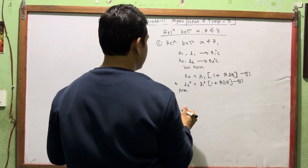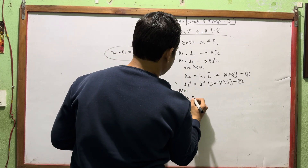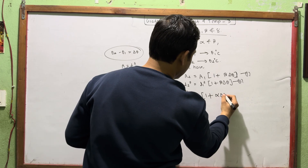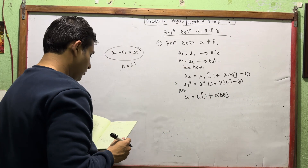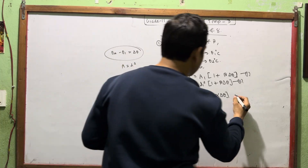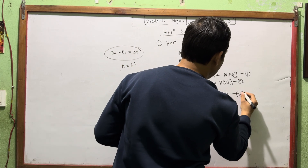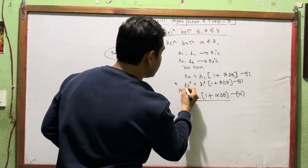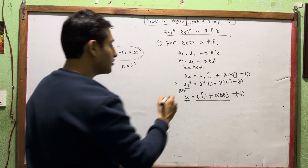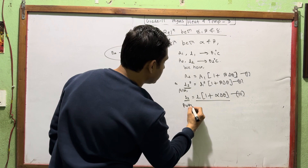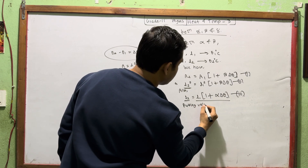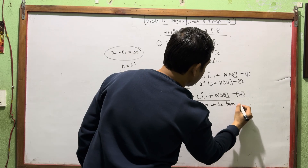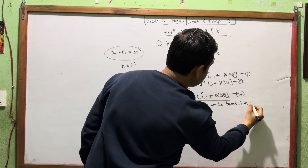For linear expansion, L2 is equal to L1 times 1 plus alpha del theta. We will call this equation 3. Now, L2 is the value we will substitute.